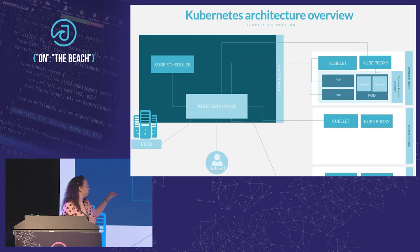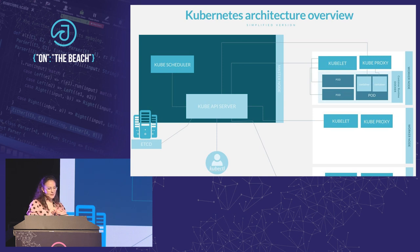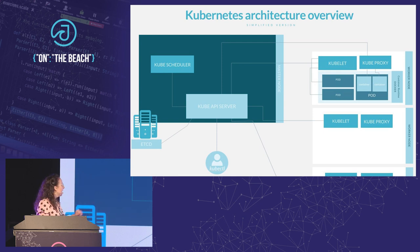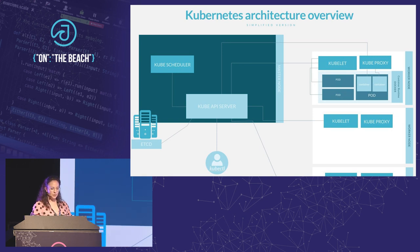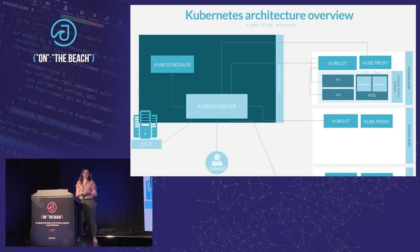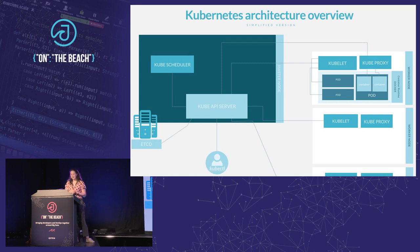Then we have the Kube scheduler, which also lives on the master node. As the name implies, it's the scheduler component of Kubernetes. It creates the pods that do not have a node assigned and selects the node, getting information from the Kube API server. On the worker nodes, we have kubelet — the main agent that runs on each worker node — which makes sure that the pods and containers are actually running. We also have the kube-proxy, which performs network forwarding and connects your containers to the outside world.